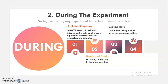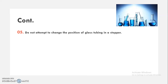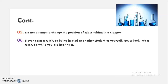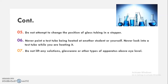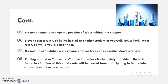Third: do not lean, hang over, or sit on the laboratory tables. Fourth: learn how to transport all materials and equipment safely. Do not attempt to change the position of glass tubing in a stopper. Never point a test tube being heated at another student or yourself. Never look into a test tube while you are heating it. Do not lift any solutions, glassware, or other types of apparatus above eye level. Fooling around or horseplay in the laboratory is absolutely forbidden — students found in violation of this safety rule will be barred from participating in future labs and could result in suspension.